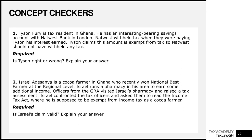Tyson is wrong. The exemption for interest applies to interest paid to an individual by a resident financial institution. NatWest Bank is in London, which makes it a non-resident financial institution, so they don't get to enjoy this exemption. Tyson is wrong — NatWest was right to withhold tax when paying him because there is no exemption applicable here. In any case, it is a UK bank making payments to a Ghanaian resident, so they must comply with UK law.